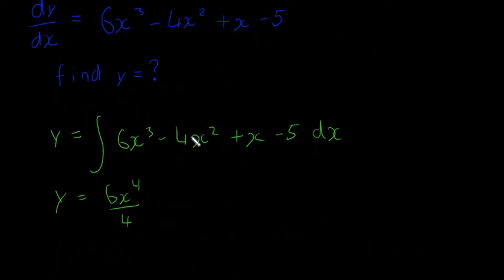You just integrate the x part basically and the number stays the same. This is going to be minus 4x³ over 3, plus x² over 2, minus 5x, plus C. I'm just going to simplify that in one more line.